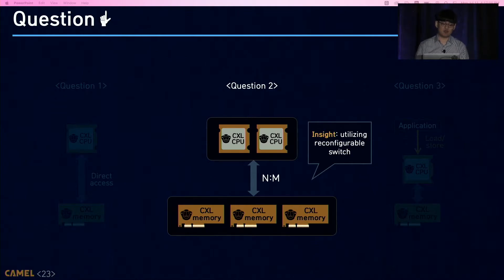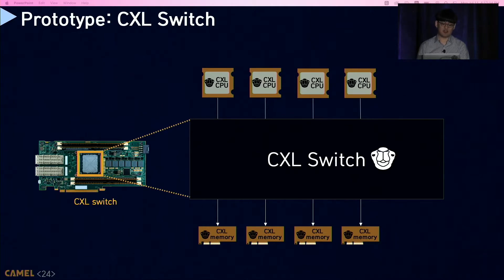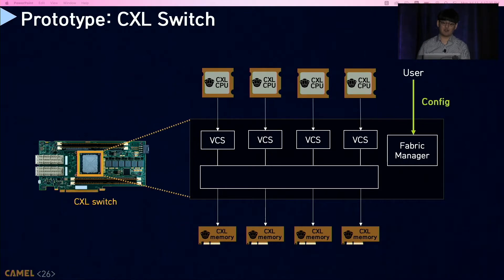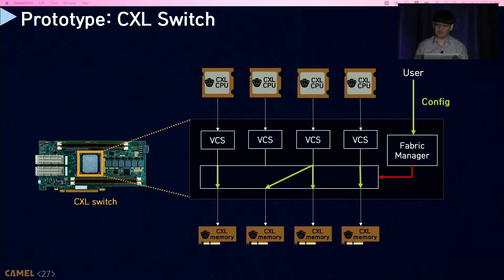To realize memory disaggregation, Direct CXL implements a reconfigurable switch that supports multiple CXL CPUs and CXL memory devices. Our CXL switch uses the same hardware platform as the CXL CPU and supports four CXL CPUs and four CXL memory devices. The CXL switch includes a reconfigurable crossbar, so connections among CXL CPUs and CXL memory devices can be changed. Users can configure the crossbar through a fabric manager, and the configuration can be changed at runtime using hot-plug and hot-remove features.